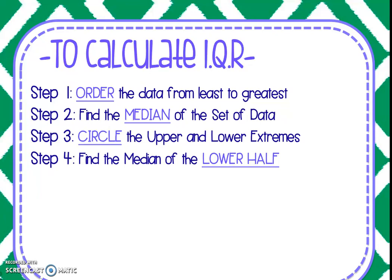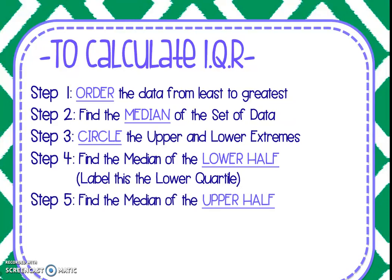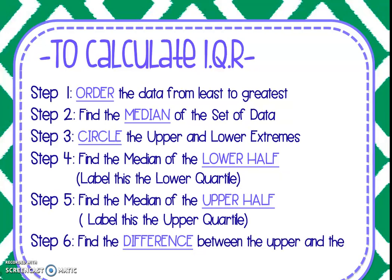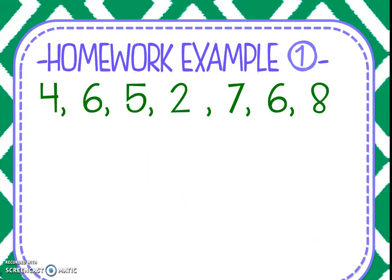Then we're going to separate them into the upper and the lower half. After you circle the median, you're going to find the median of the lower half and label that the lower quartile. Find the median of the upper half, label that the upper quartile, and then finally you're going to find the difference between the upper quartile and the lower quartile. So when you take the median of the upper half and the median of the lower half, then you're going to subtract those two and that will give you the interquartile range.